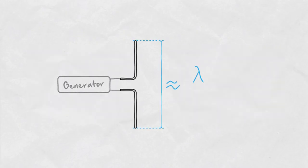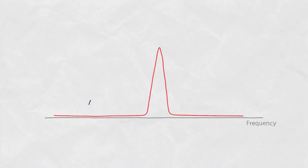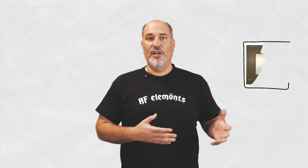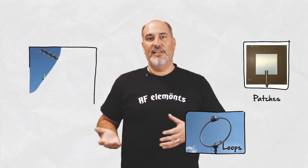The length of the dipole has to be equal to at least half of the signal wavelength in order for it to work. This means that the radiation properties and bandwidth, which is usually quite narrow, depend on the size of the antenna. Some examples of antennas based on resonant elements are patches, loops, and Yagis.